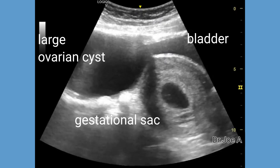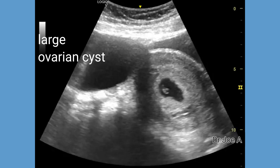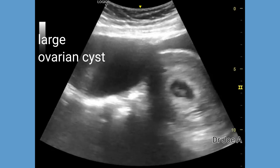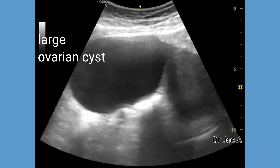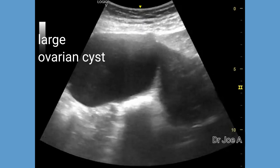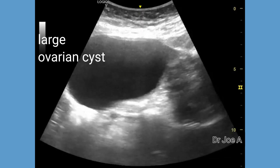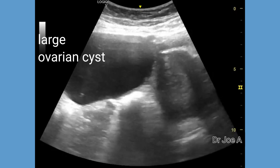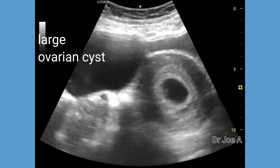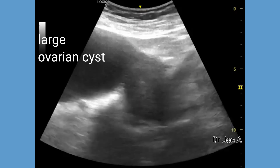While ovarian cysts can be common in pregnancy, a large maternal ovarian cyst can increase the risk of complications such as torsion or rupture. It is important for the gynecologist to closely monitor the patient with regular ultrasound examinations to ensure that the cyst is not causing any harm to the developing fetus or the mother.